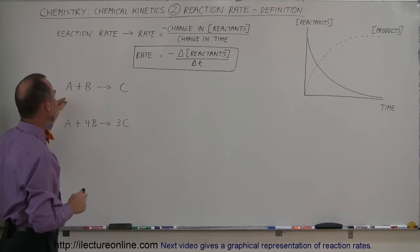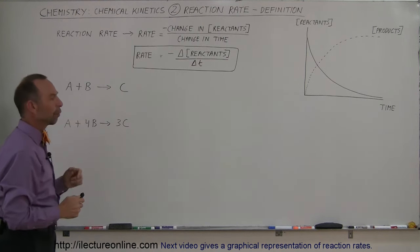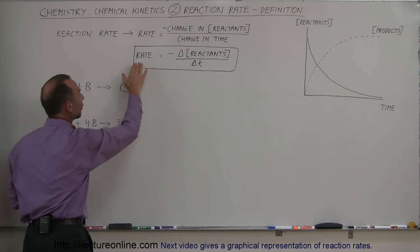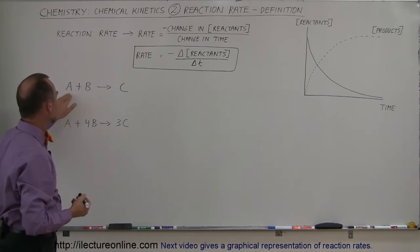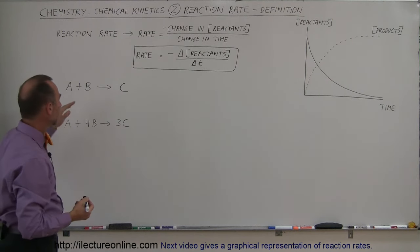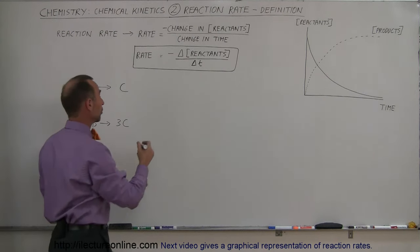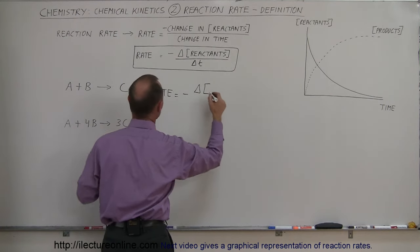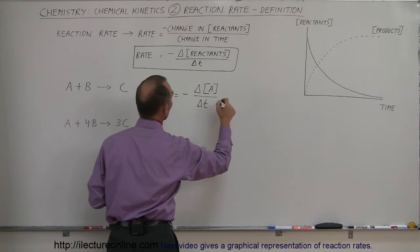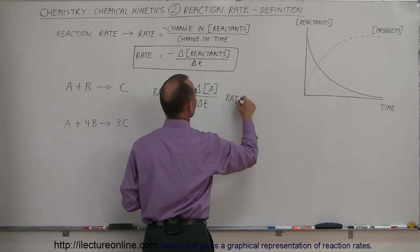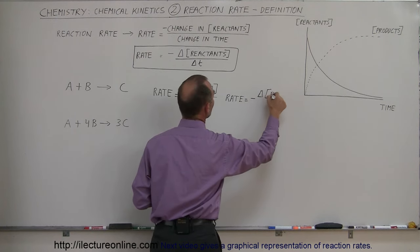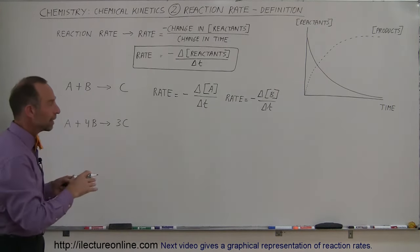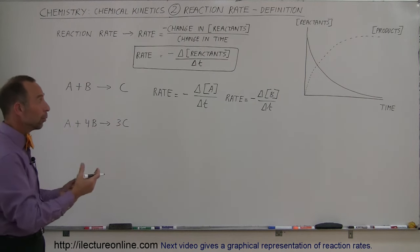Let's say we have a reaction where we have two reactants and one product: A plus B forms C. How do we express the rate of that reaction? We can look at the reactants or the products. You need one of A and one of B to make one of C. So the rate can be expressed as negative the change in the concentration of A divided by the change in time, or as negative the change in the concentration of B divided by the change in time. Since you need the same amount of A and B, the rate expressed either way will be the same.